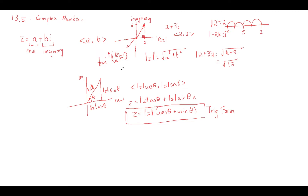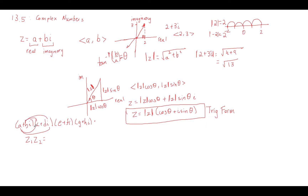I'm going to give a quick overview of multiplication, division, and powers — you can look at the proofs in the textbook. If you're multiplying two complex numbers, this is where the trig form becomes really convenient. If you had to multiply something like (a + bi)(c + di)(e + fi)(g + hi), you'd have to keep distributing over and over — it gets really complicated with many chances to make a mistake. You can multiply complex numbers in a much easier way.